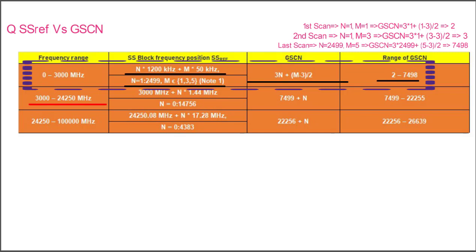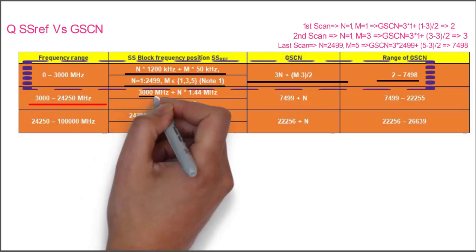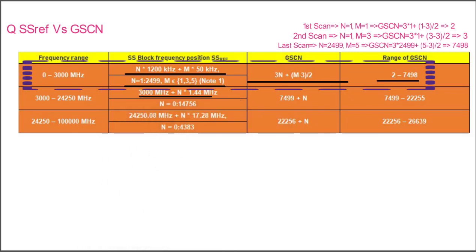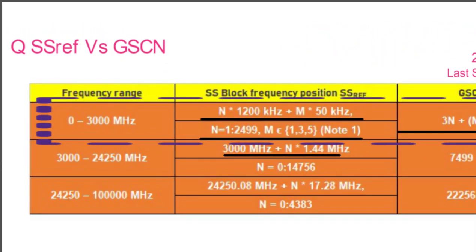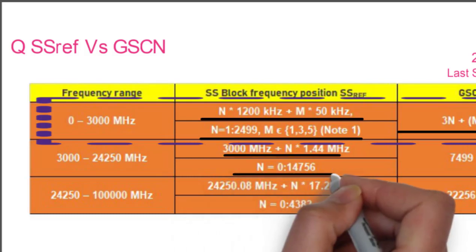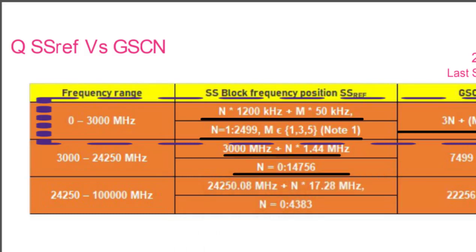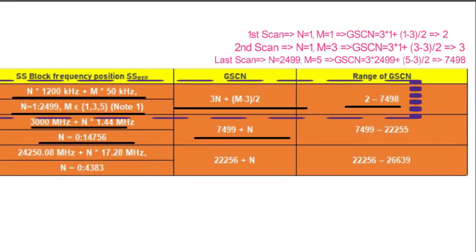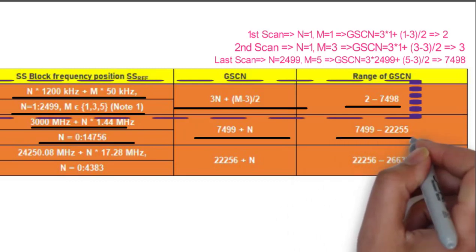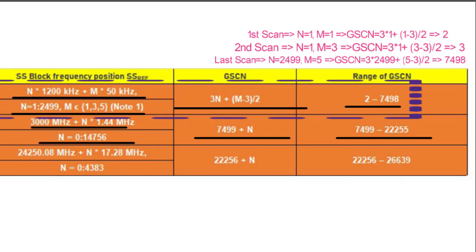For the frequency range 3000 to 24250 MHz, the synchronization raster size is 1.44 MHz, so every 1.44 MHz step you try to find the SSB position. The formula is SS_ref = 3000 + N × 1.44 MHz, where N = 0 to 14756. The GSCN formula is 7499 + N, giving a GSCN range of 7499 to 22255.